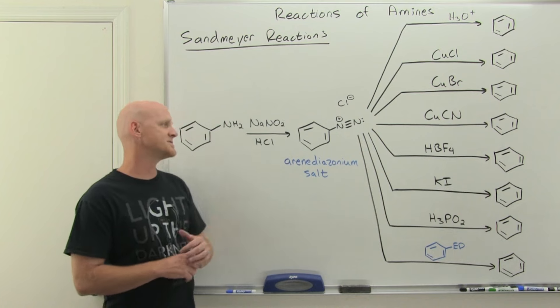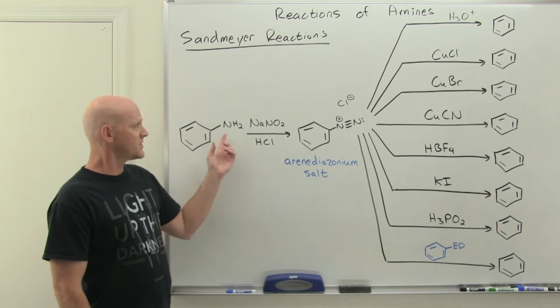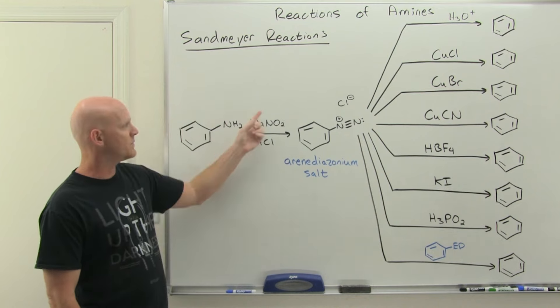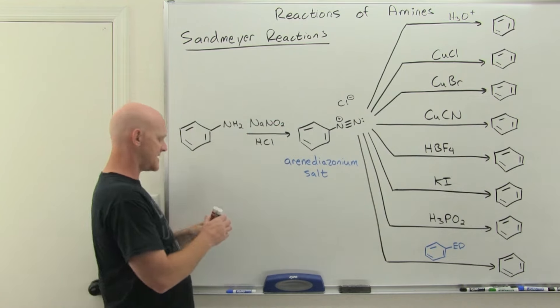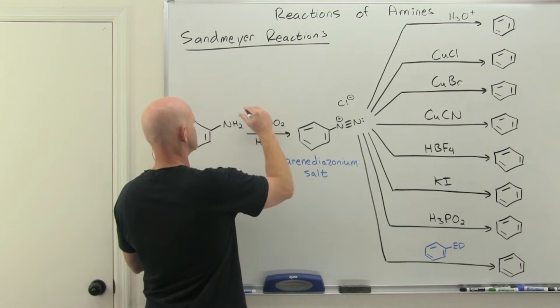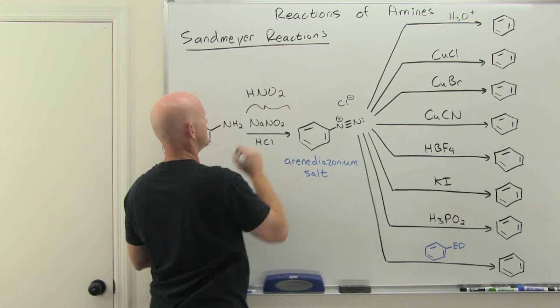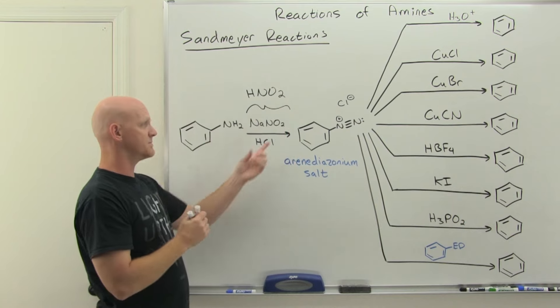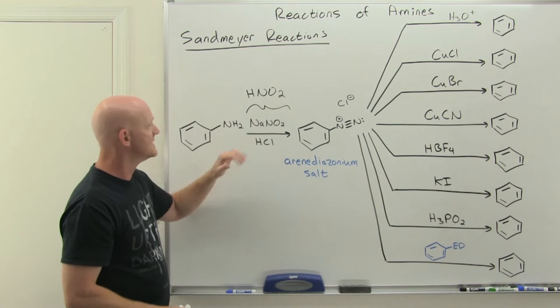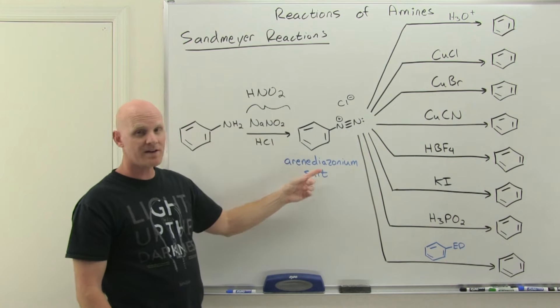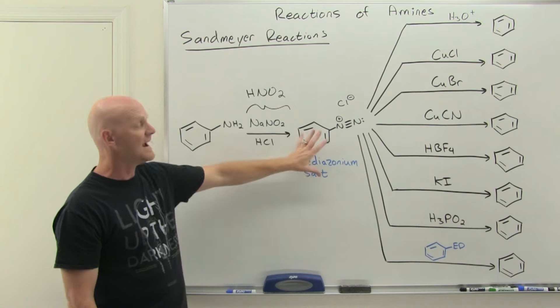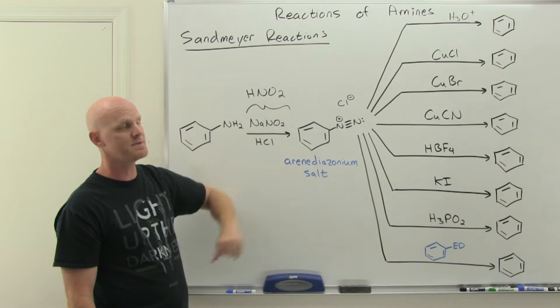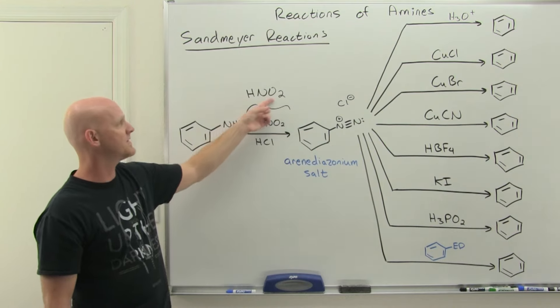Alright, so Sandmeyer reactions here. In this case, we're going to do this with a primary amine, and we're going to react it with what's called nitrous acid. It turns out that sodium nitrite with an acid like HCl is going to form HNO2, nitrous acid. You're simply protonating the nitrite ion. If you do it with HCl, you get the chloride arenediazonium salt. If you did it with HBr, you'd get the bromide arenediazonium salt. But the arenediazonium ion is going to be the important part.